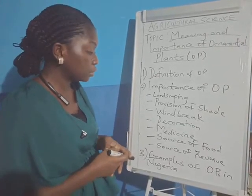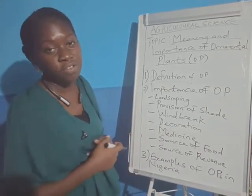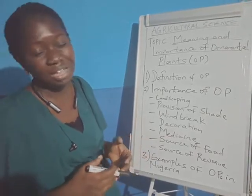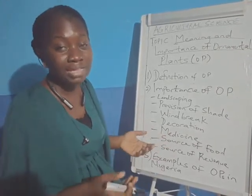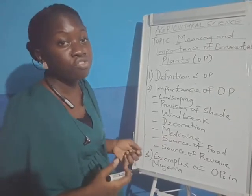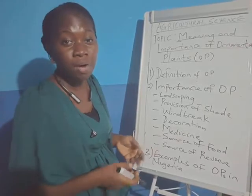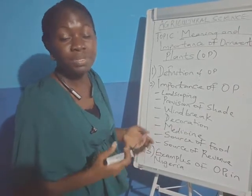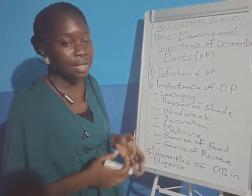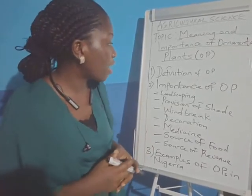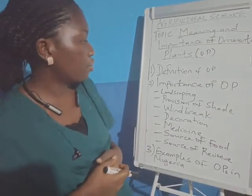Now, what are the examples of ornamental plants in Nigeria? We have many examples. There are some grasses used to beautify the environment, such as carpet grass and bahama grass. We also have examples of flowers such as rose, hibiscus, crotalaria, and allamanda. They are used to beautify the environment and some are also used as decoration.